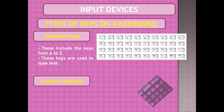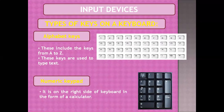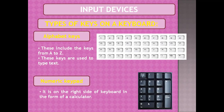Next, we have the numeric keypad. The numeric keypad is on the right side of the keyboard in the form of a calculator. It has number keys from 0 to 9, an enter key, four mathematical function keys — addition, subtraction, multiplication, and division — and a numlock key. The numeric keypad is usually used for calculations.